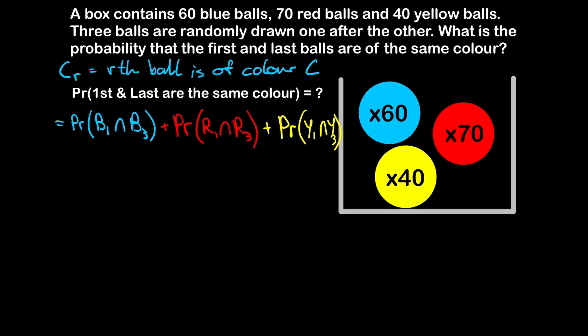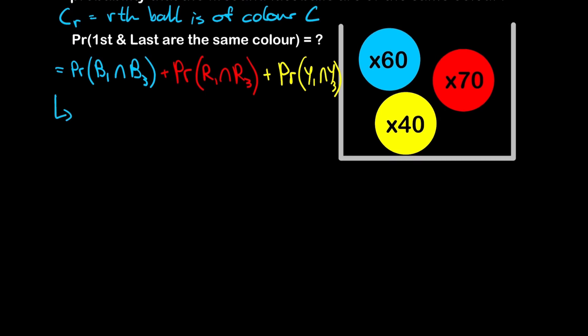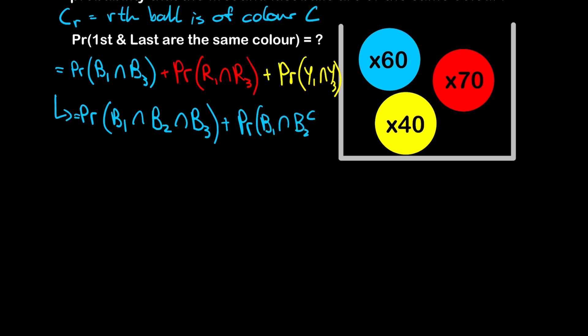Let's expand each of these three probabilities in more detail, since they don't account for the second ball. For the blue part, we can get it two ways: first ball blue, second ball blue, and third ball blue; or first ball blue, second ball not blue (the complement), and third ball blue. The first and third balls are fixed as blue in both cases — what differs is whether the second ball is blue or not.